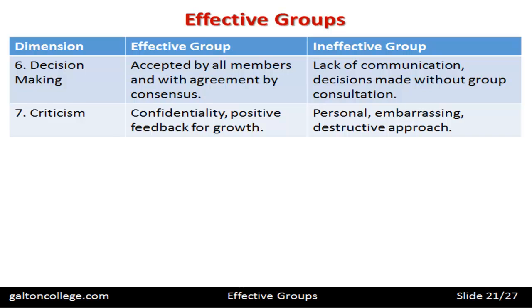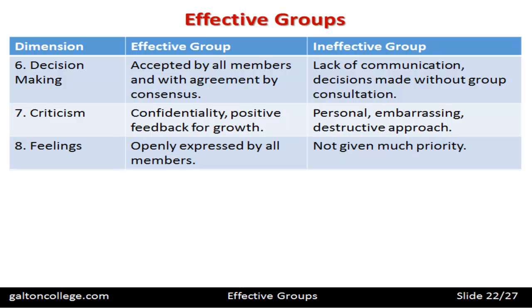For an ineffective group, criticism can be much more personal — members feel it's a criticism against them personally, which can lead to embarrassing situations and be very destructive and confrontational. Regarding feelings, in an effective group, feelings are openly expressed by all members — they talk about how they feel, how the group is interacting, and how they feel about the whole thing. In an ineffective group, feelings don't get much attention; members see it as a waste of time.